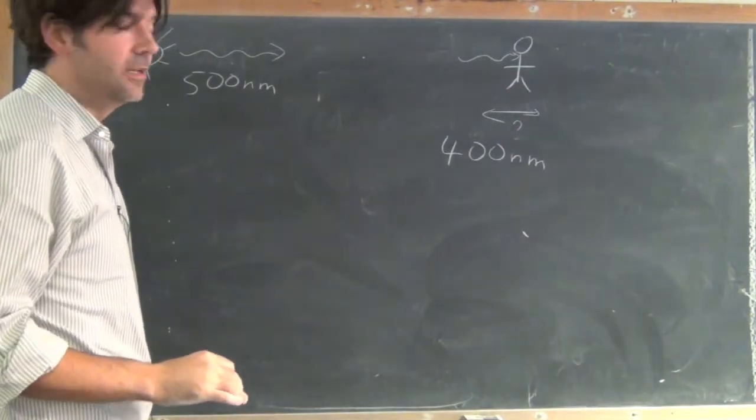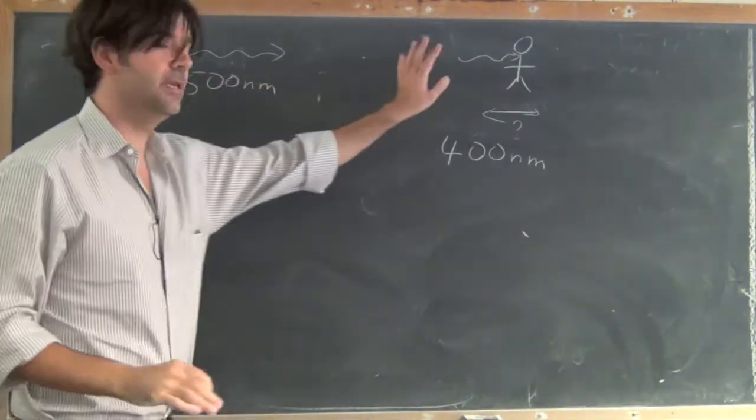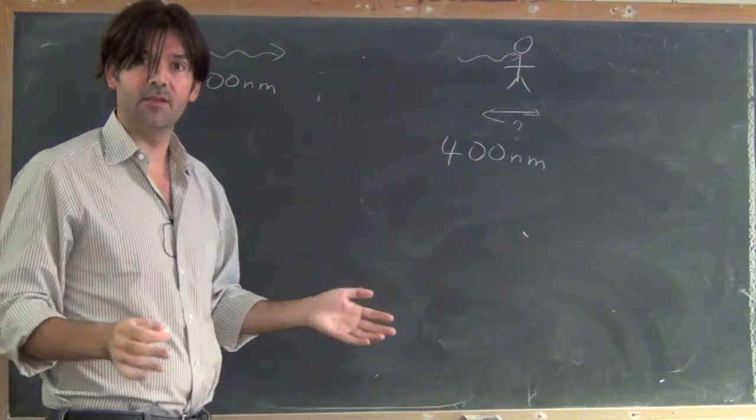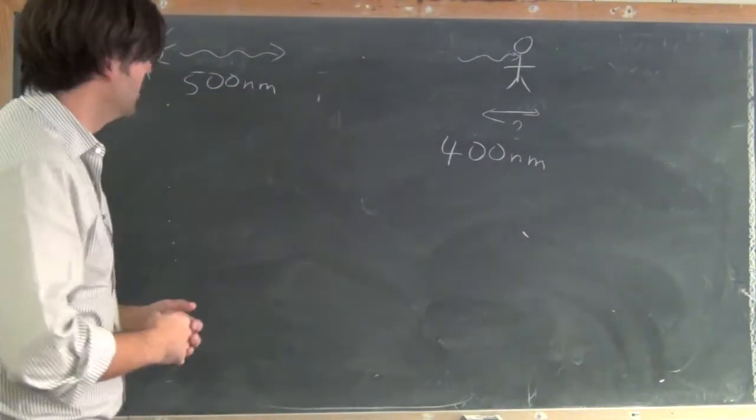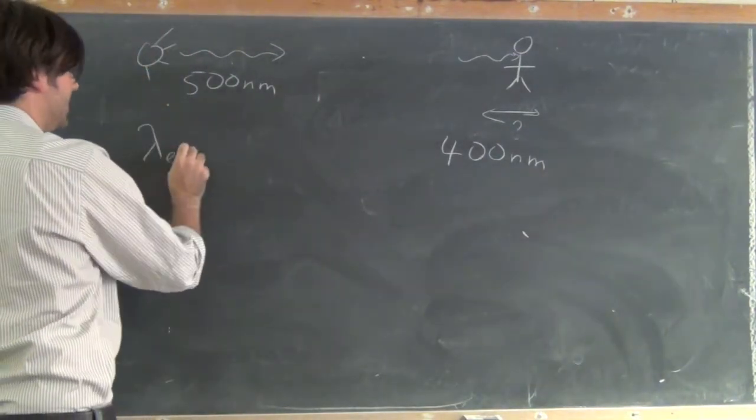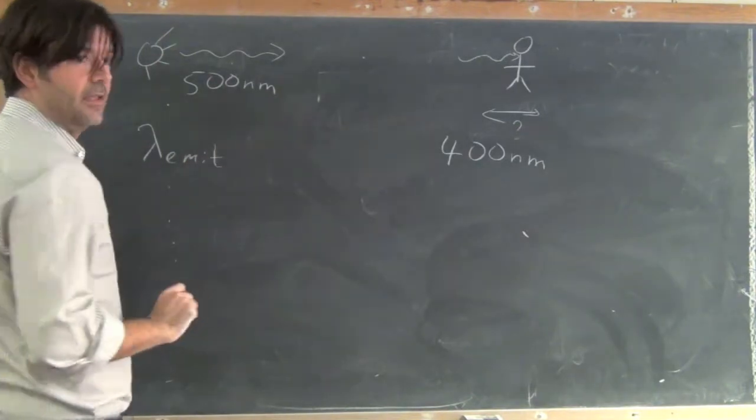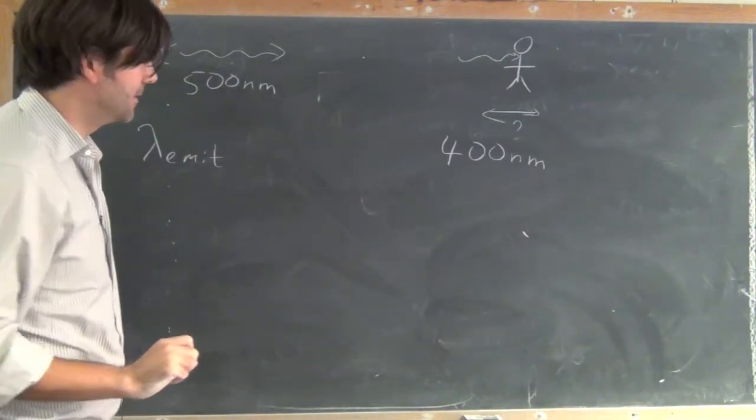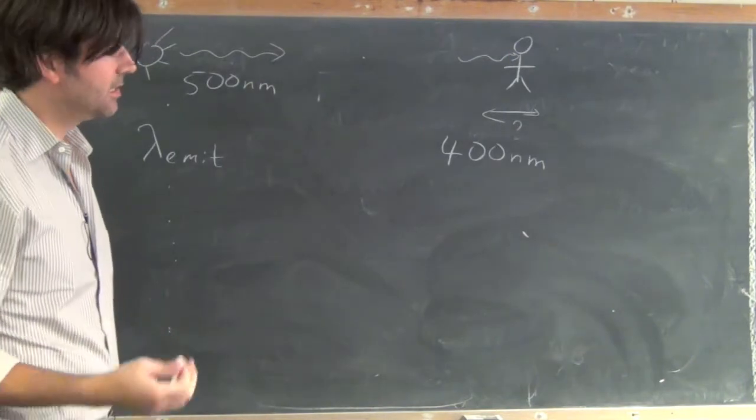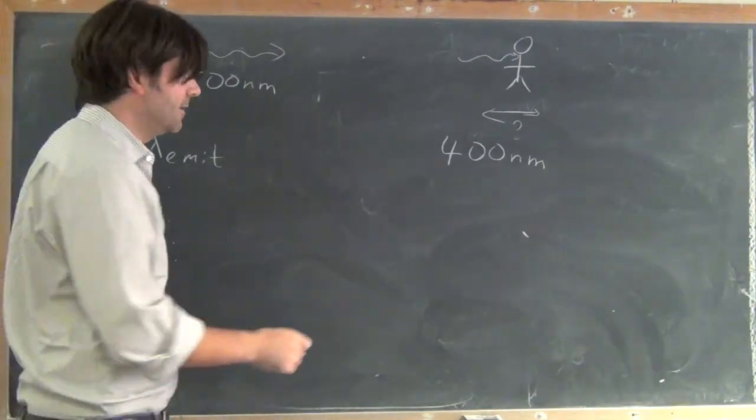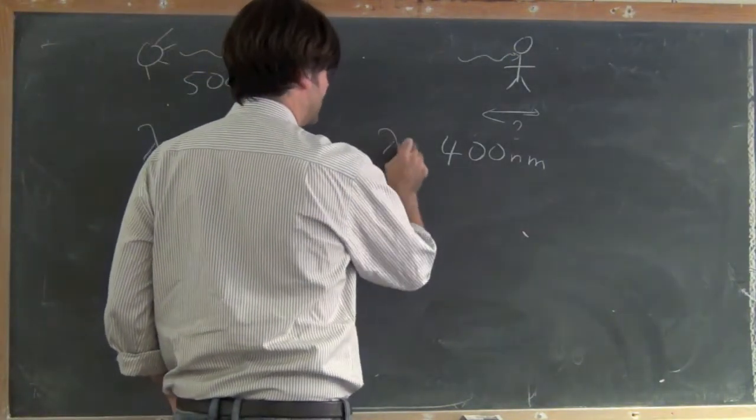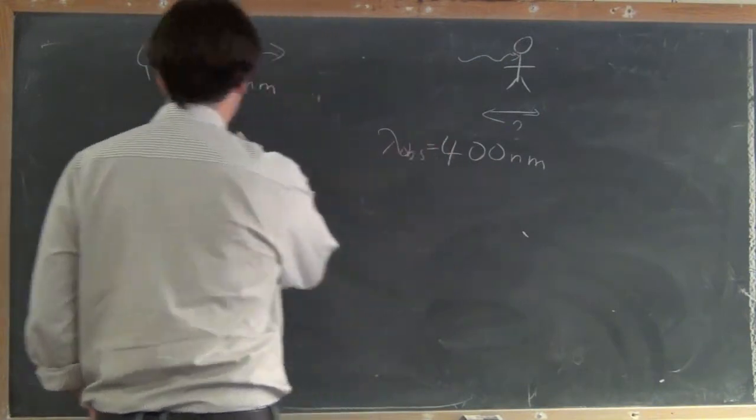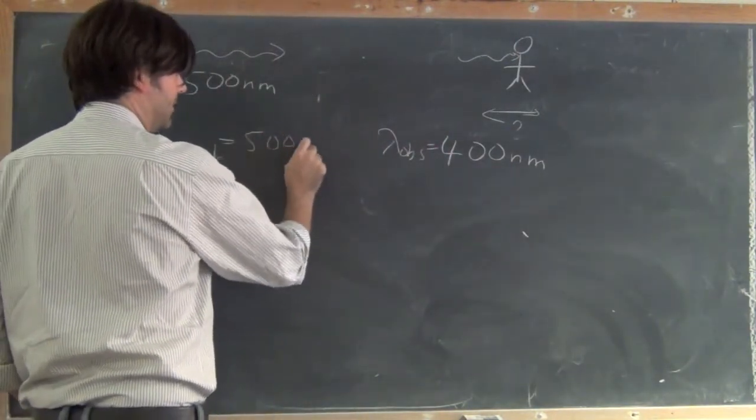So, 500 nanometers is what, if you take me out of the question, that's what the wavelength of the light is. So that's lambda emitted, the wavelength of the light when it's emitted. But I see, as the observer sees it, I see the light of 400 nanometers, so lambda observed was 400 nanometers.